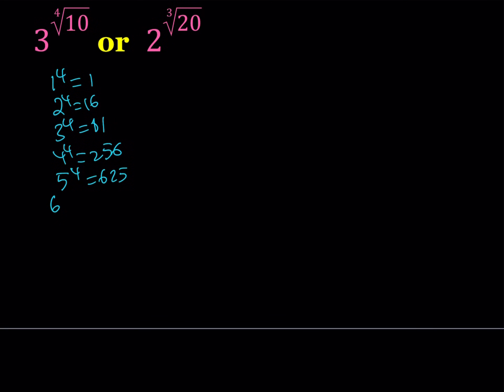6 to the 4th power is just going to be 36 squared, which is 1,296. 7 to the 4th power is 2,401, and then 8 to the power 4 is basically the same thing as 2 to the power 12, which is 4,096.